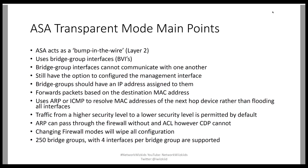Packets are forwarded based on the destination MAC address. The ASA in transparent mode will use ARP or ICMP to resolve MAC addresses of the next-hop device, and it will not flood all interfaces if it does not know the next-hop MAC address. Traffic from a higher security level to a lower security level is permitted by default.